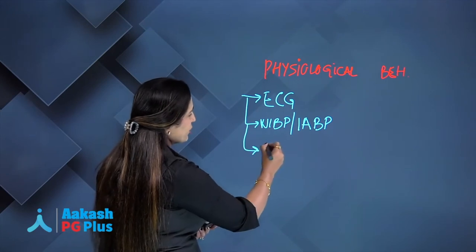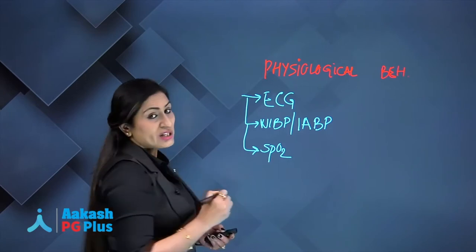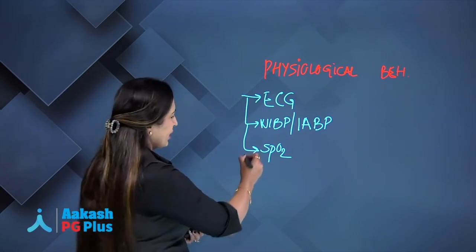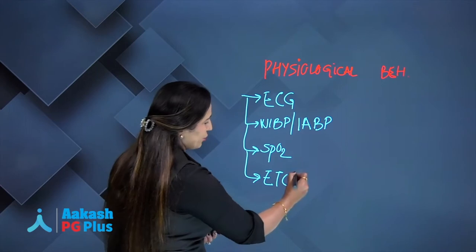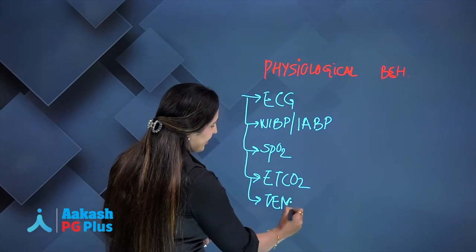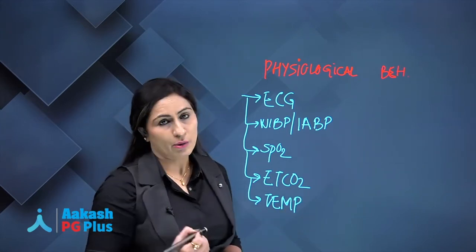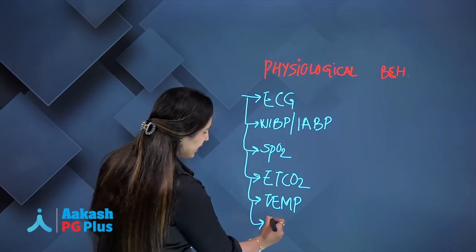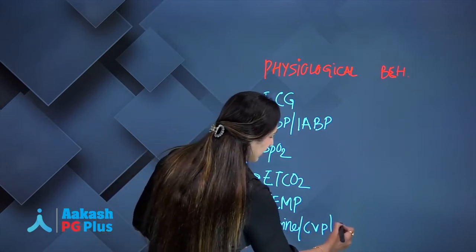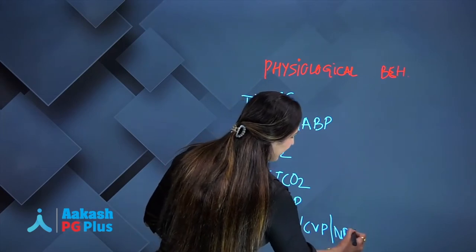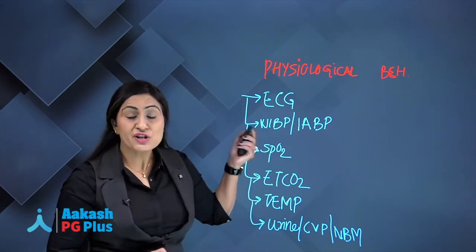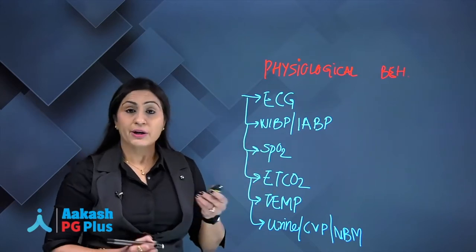Physiological monitoring also includes measuring oxygen saturation of arterial blood using a finger pulse oximeter probe, end-tidal CO2, and temperature if the conduct of anesthesia is taking more than one hour. Other monitors include urine output and CVP monitoring. These are the monitors which help us measure the physiological state of the patient during anesthesia.